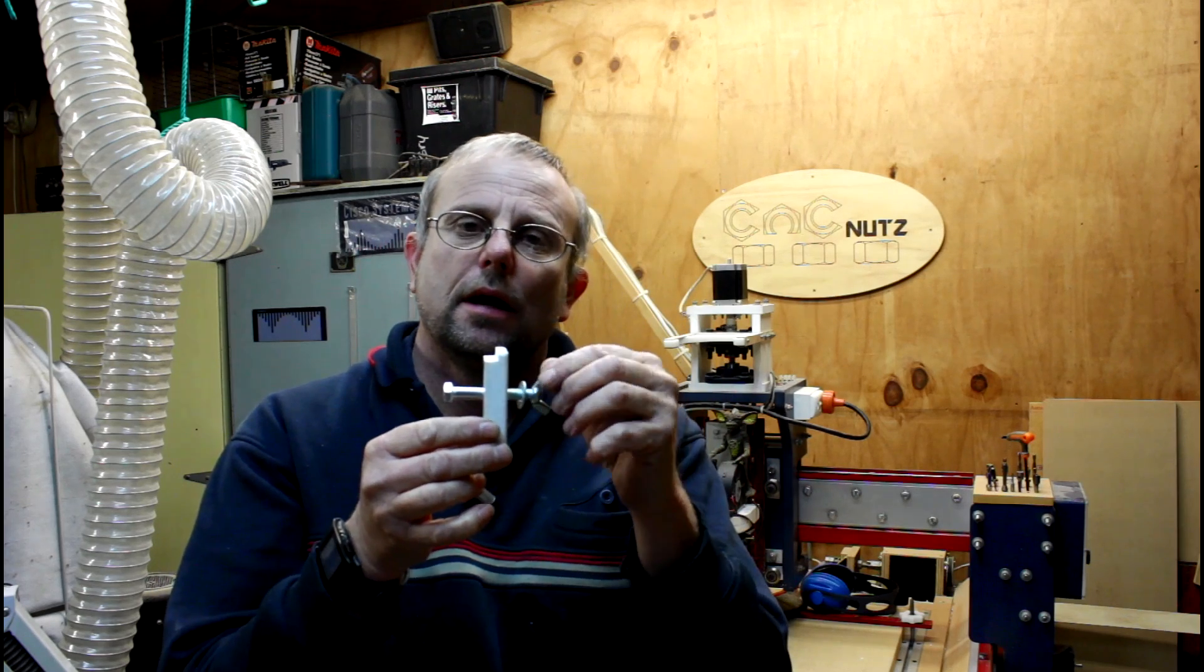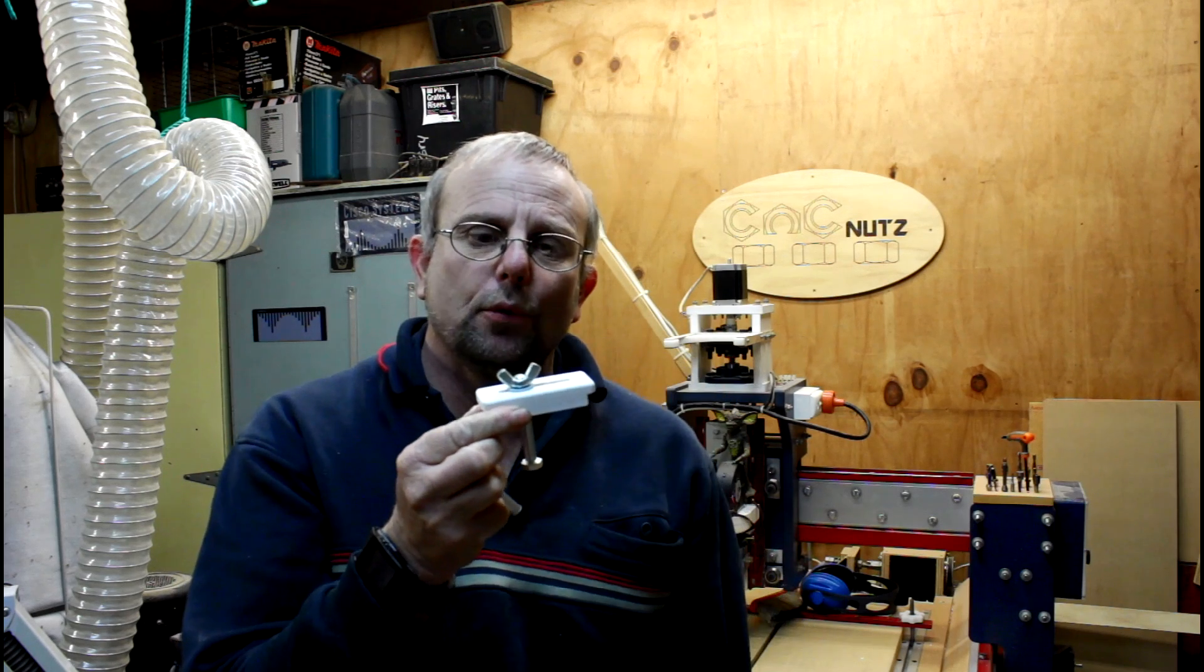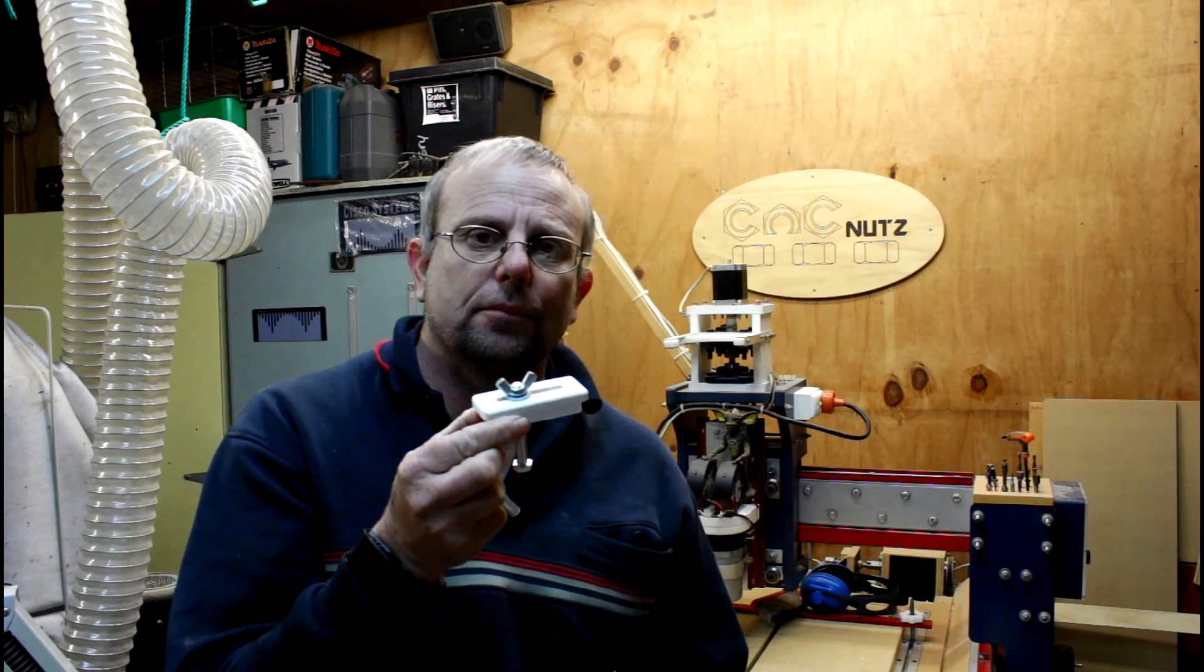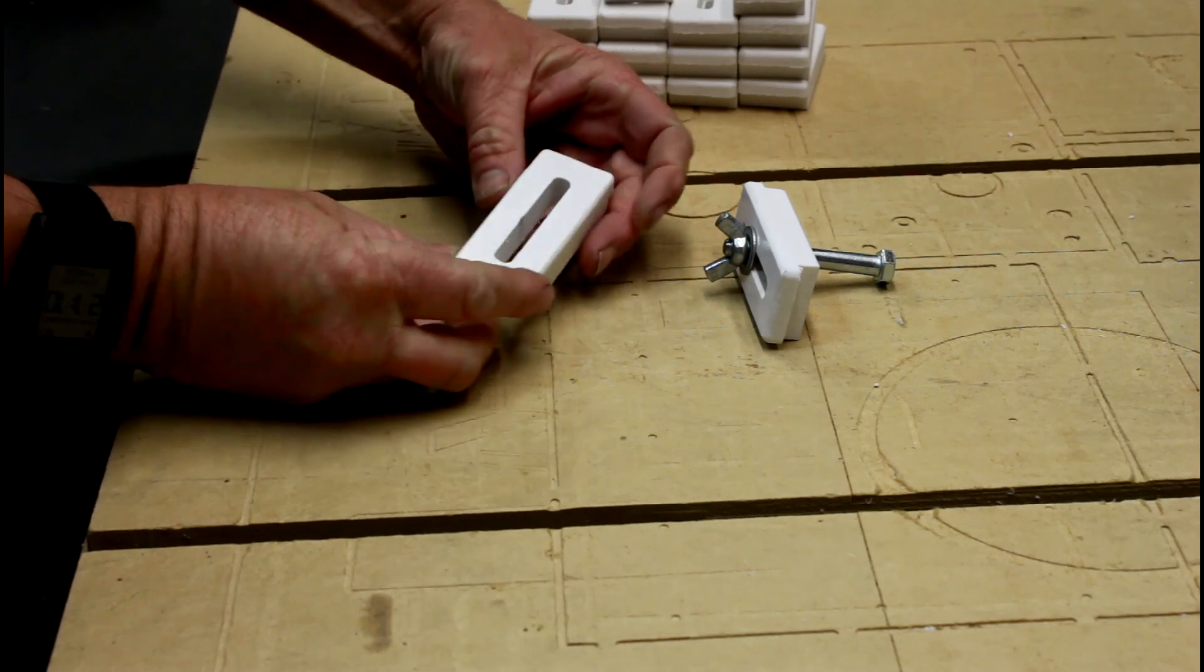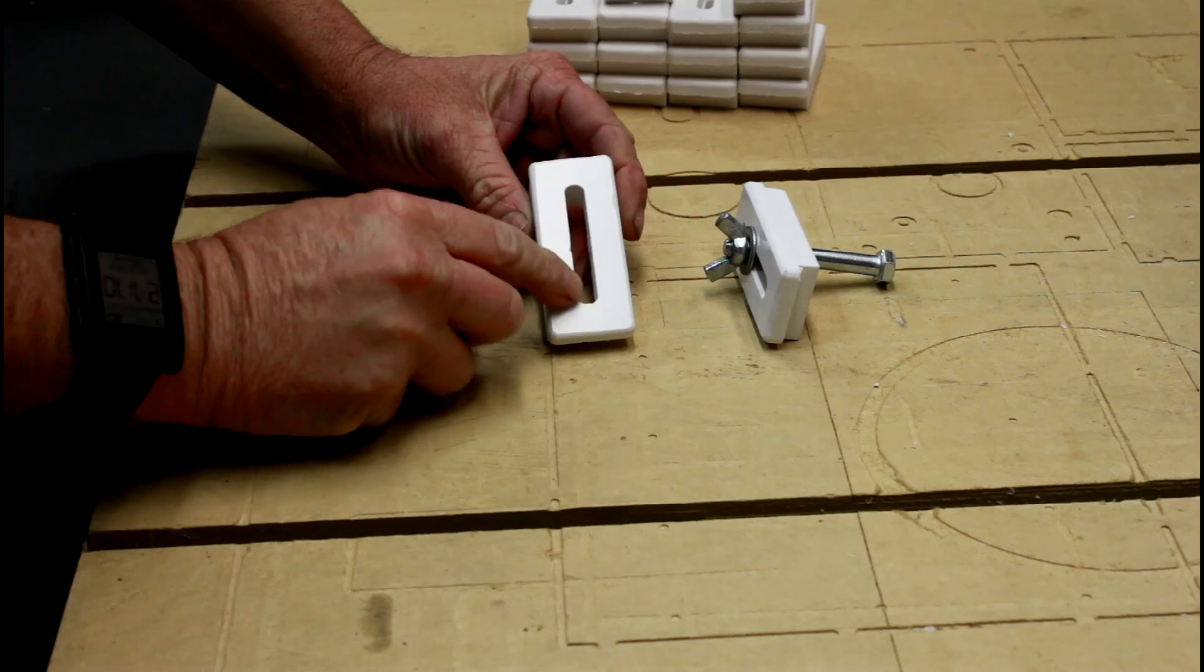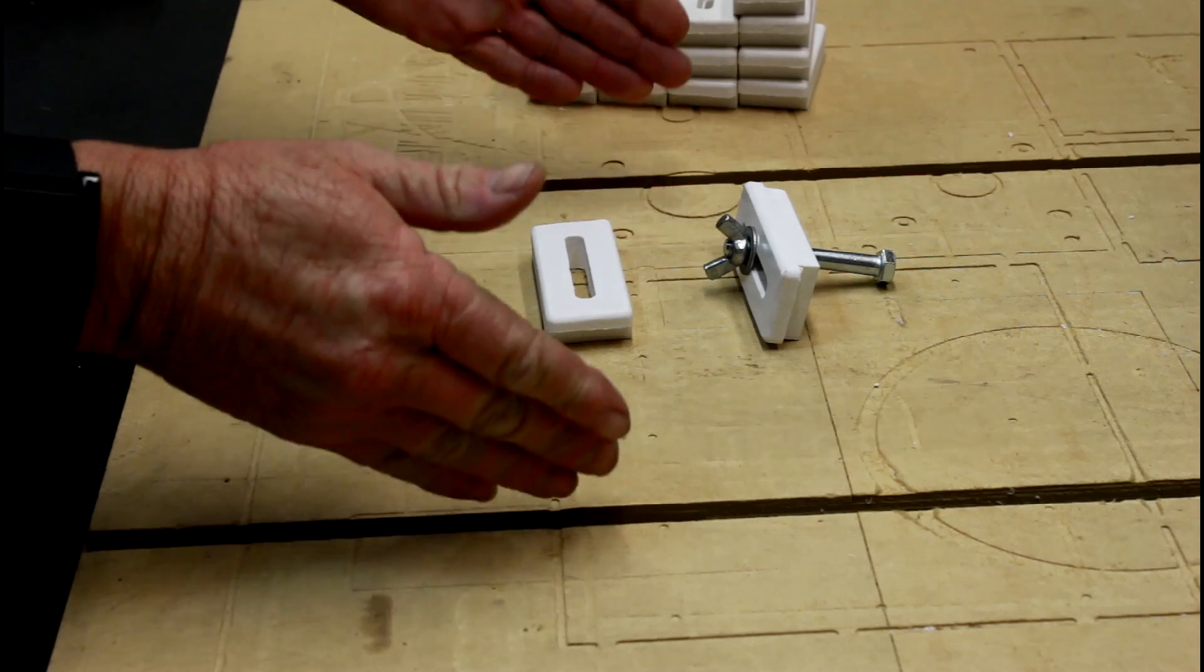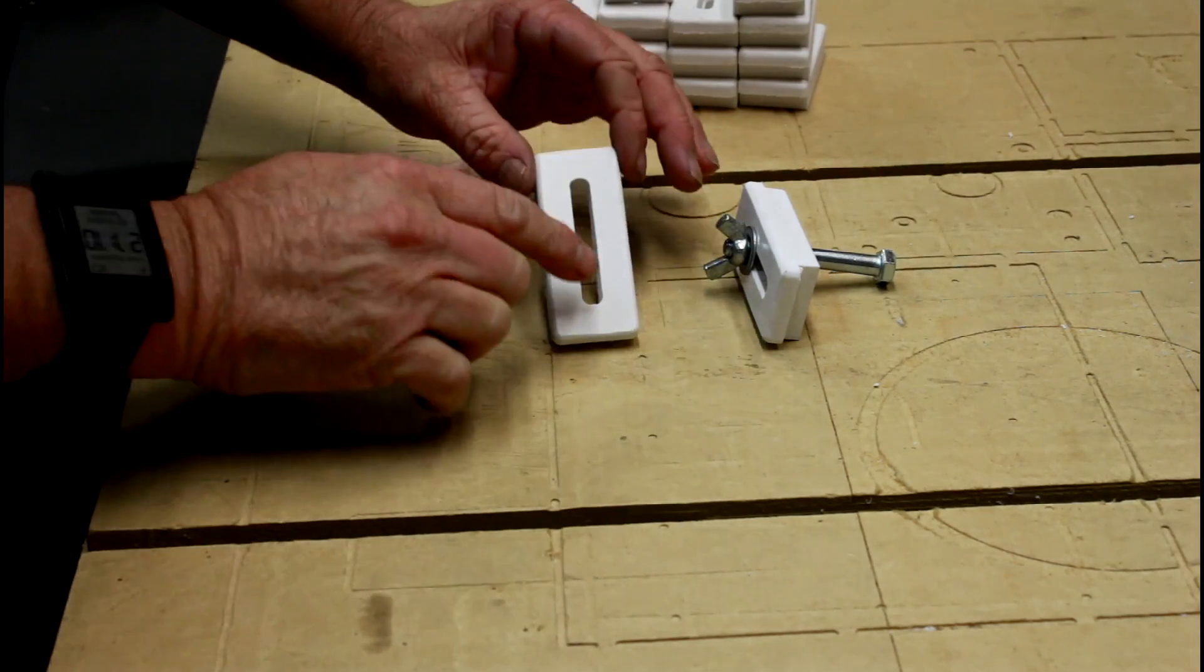Let's take a closer in-depth look at the clamp itself. There really is very little that's critical about this design. The first part is the slot, which is determined by the bolt that I use, and the bolt is determined by the slots on my machine. In my case, this is an 8 millimeter bolt with a corresponding 8 millimeter slot.